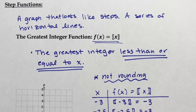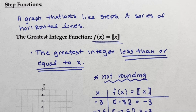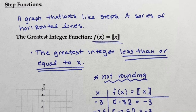Even if we have negative 1.9999 with all of those 9's — you are thinking that, of course, is going to be negative 2. But that is rounding. And if we have negative 1.001, this is also going to be negative 2. All of this is going to go to negative 2 up until we hit negative 1.